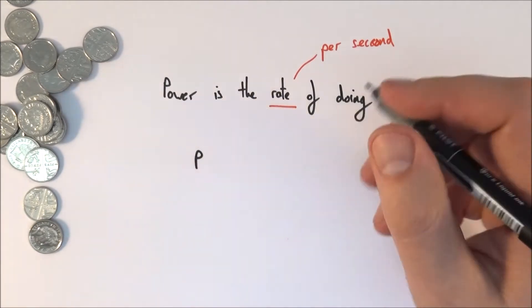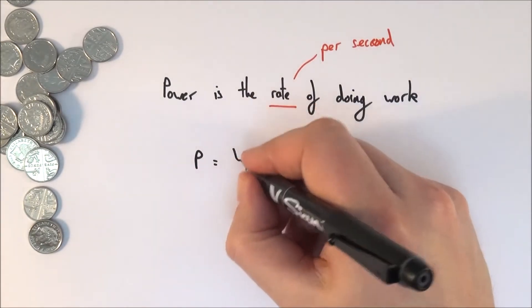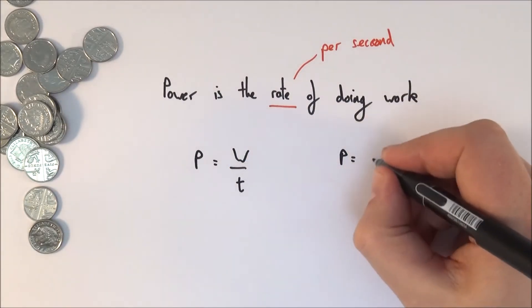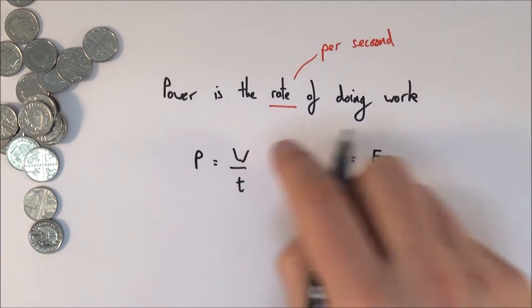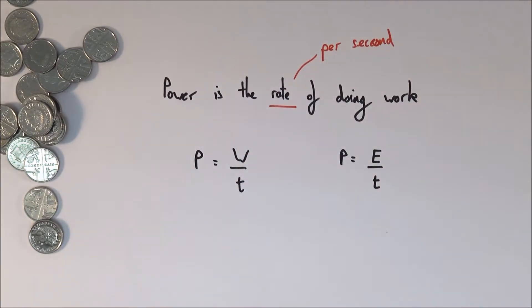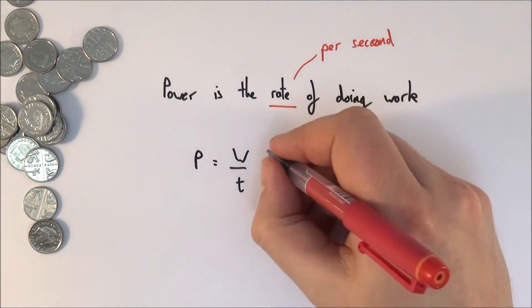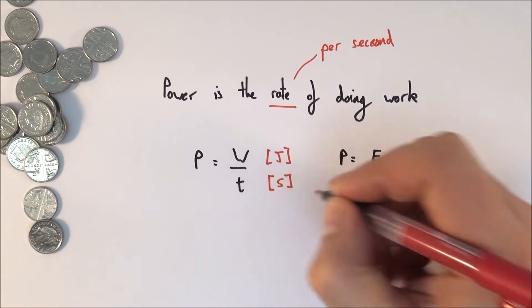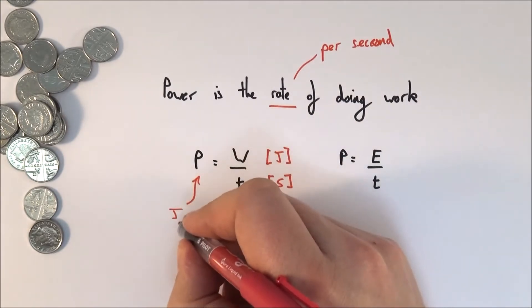The equation for this is that P stands for power, so it's a capital P - you've got to make sure it's capital - and that's equal to the work done per unit time, or we can also write it as power equals the energy transferred per unit time. So we can use W or we can use E. We measure work and energy in joules and we measure time in seconds, so the unit for power can be the joule per second.